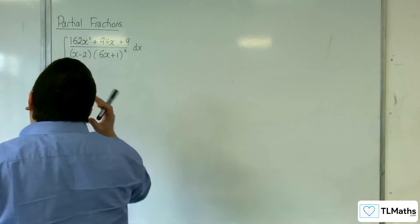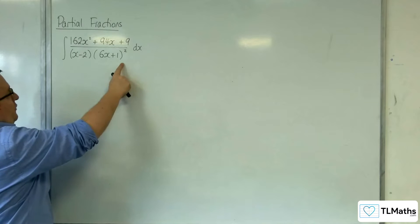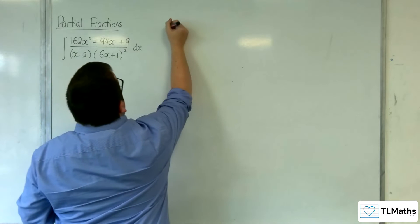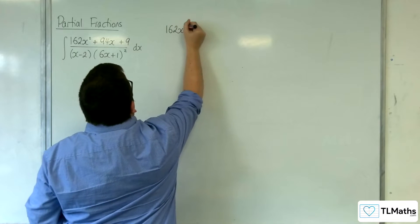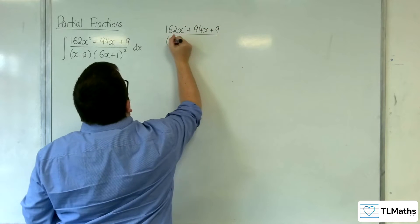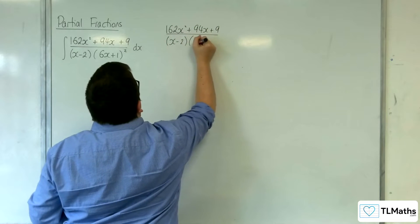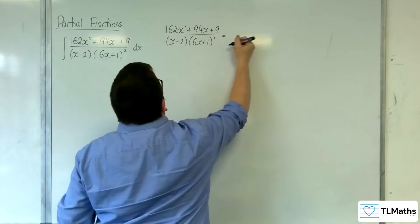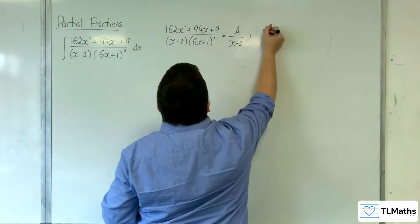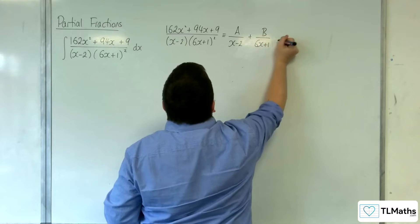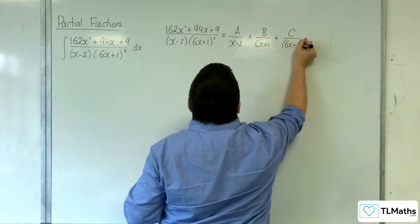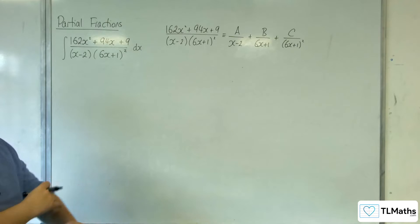The first thing is you're going to need to spot that we need to split that into partial fractions before we can continue. So 162x squared plus 94x plus 9 over (x − 2)(6x + 1) squared will be equivalent to A over (x − 2) plus B over (6x + 1) plus C over (6x + 1) squared. That is the format we need to have.